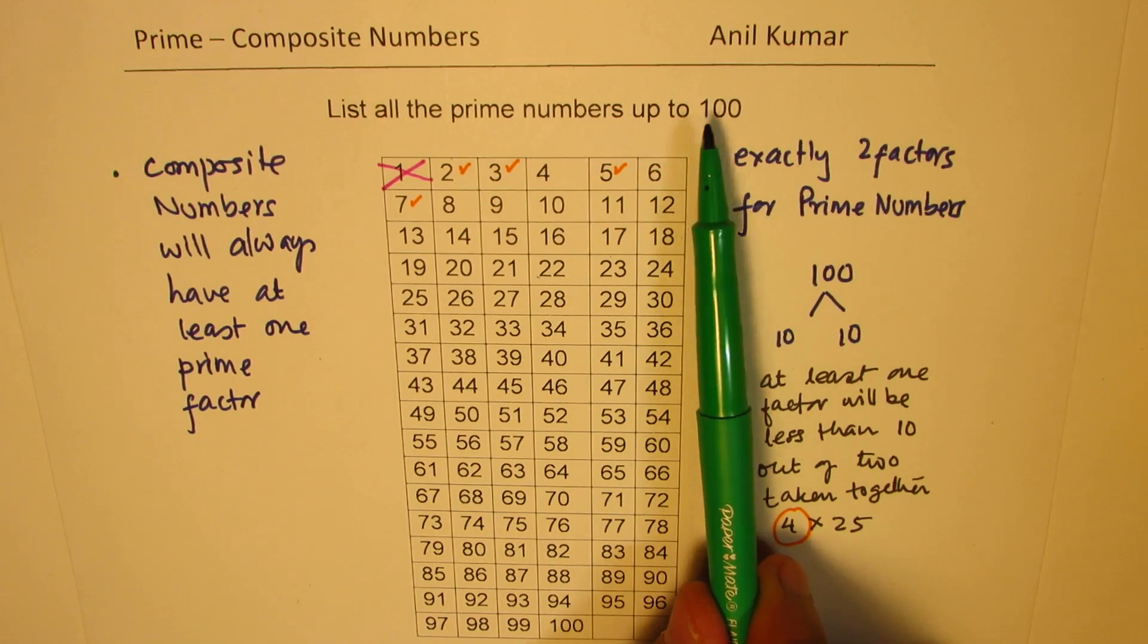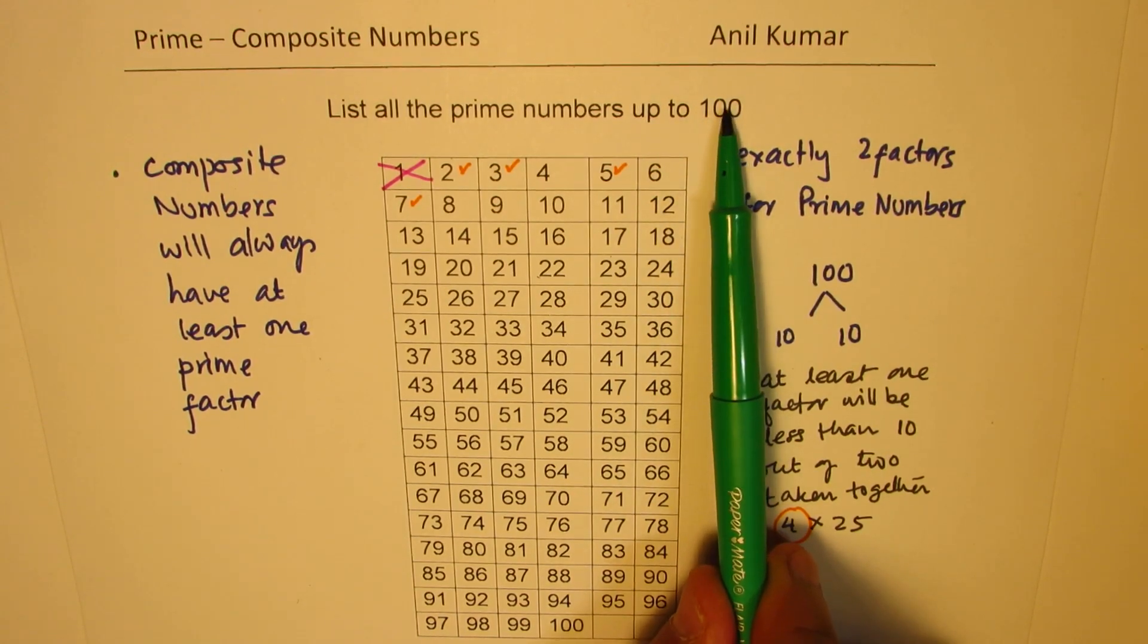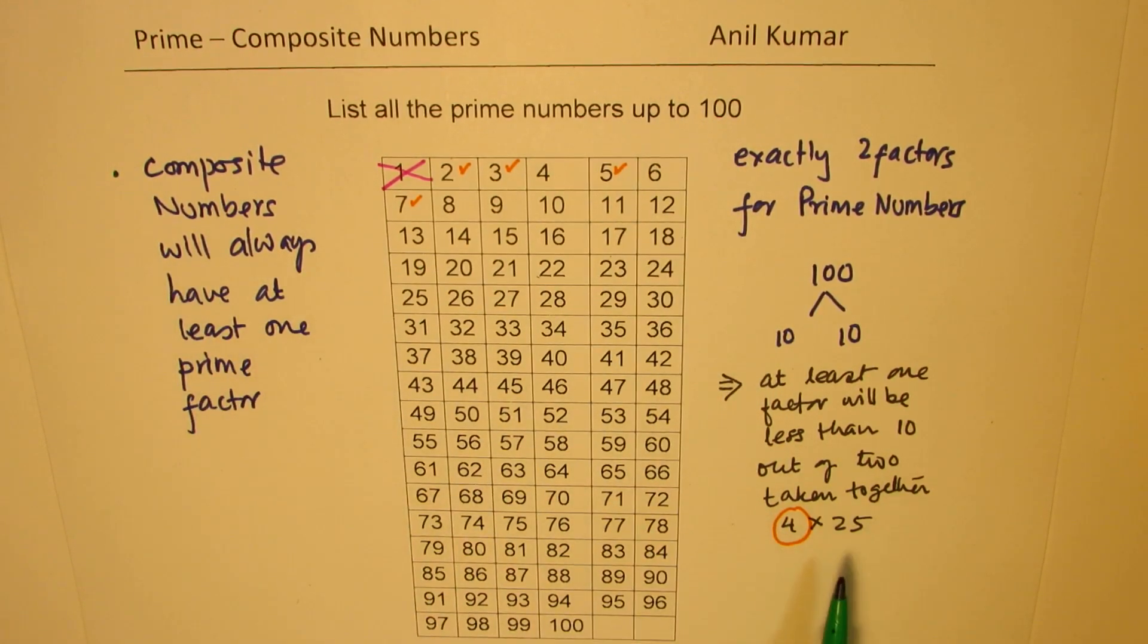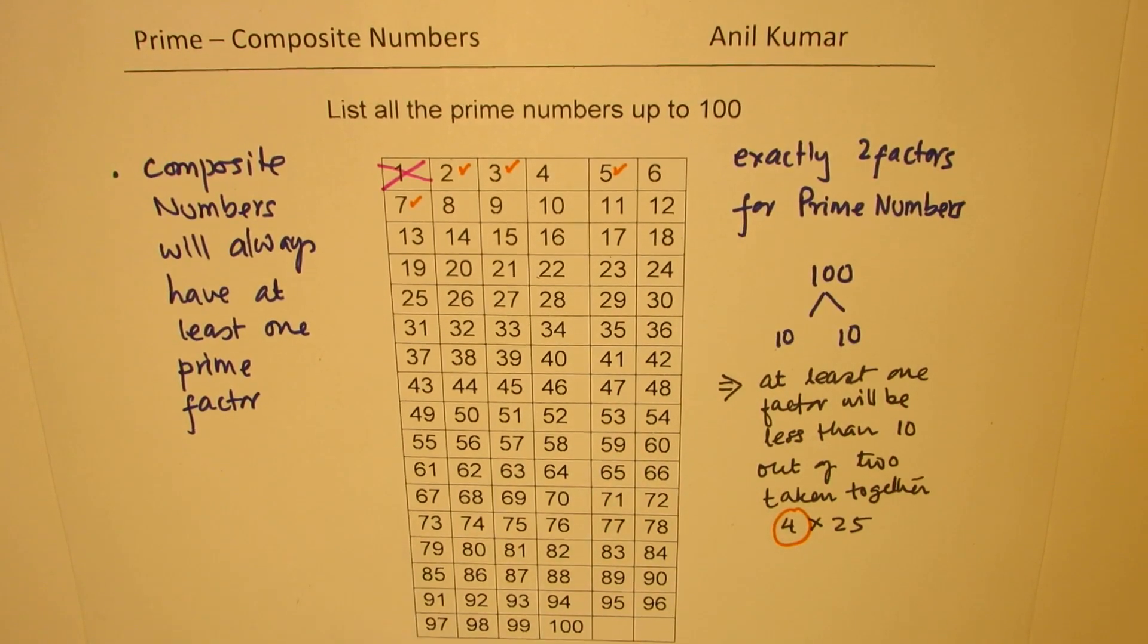If you are looking for numbers less than 100, then we could consider factors less than 10. Do you understand? Less than 10.